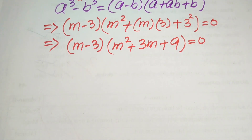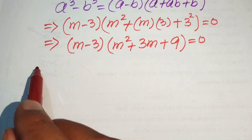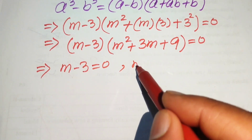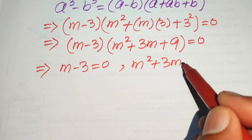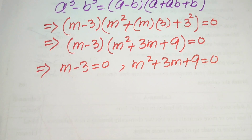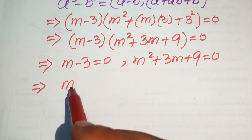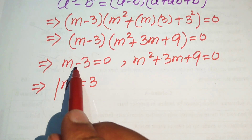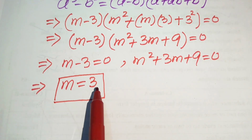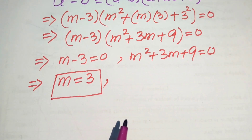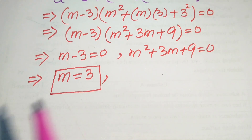Now we divide this equation into two cases. The first case is m minus 3 equals 0, and the second case is m squared plus 3m plus 9 equals 0. From the first case we easily get m equals 3, since moving minus 3 to the right hand side gives plus 3. This is our first real root.